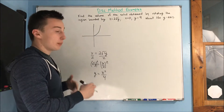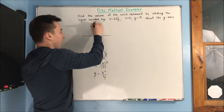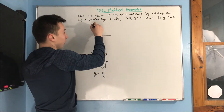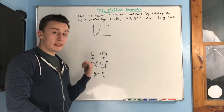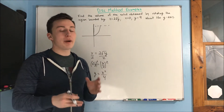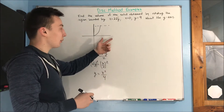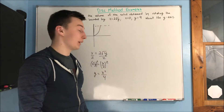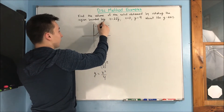Now we have an idea of the first bound. Our next bound is x equals 0, and we have y equals 9 as a bound going across. We want to rotate this about the y-axis. Make sure that you are rotating about the right axis — don't make the mistake of rotating about the x-axis and messing everything up.